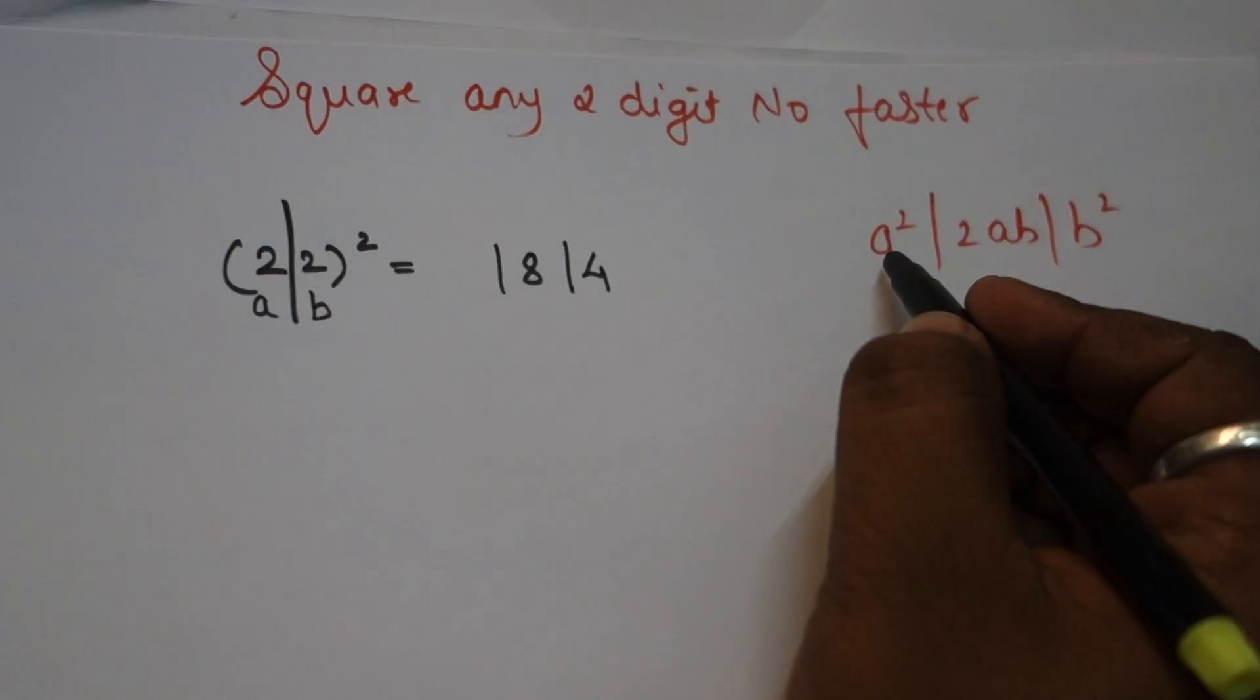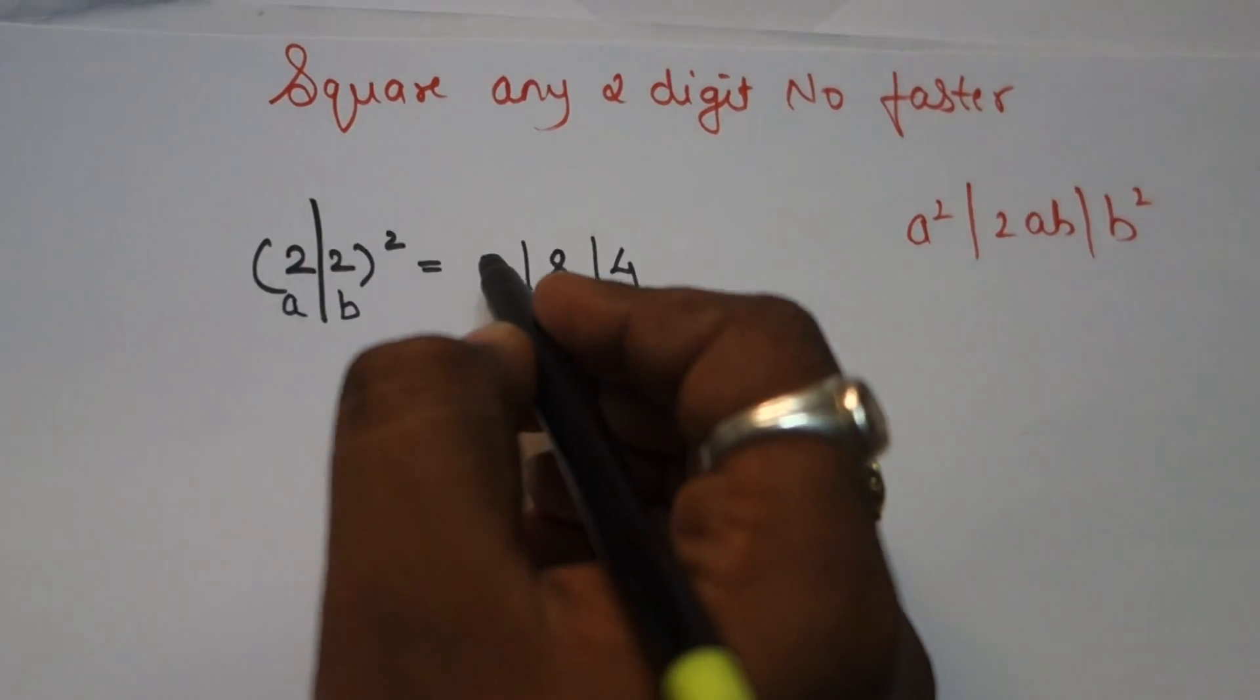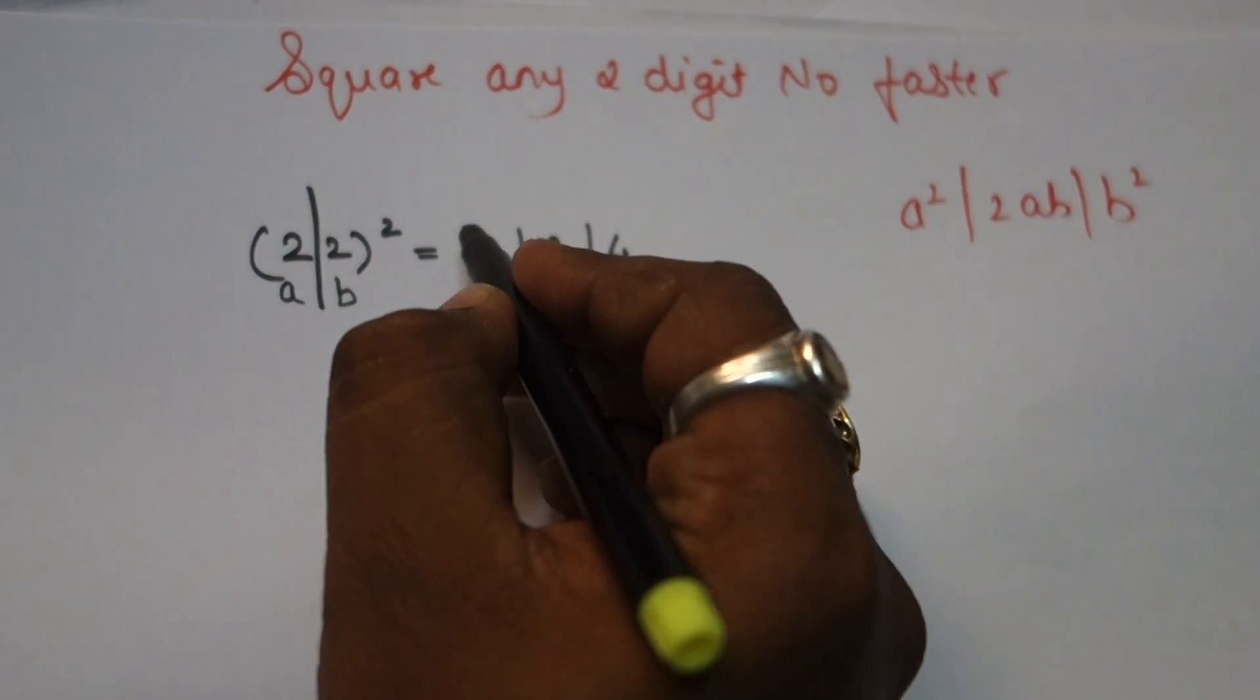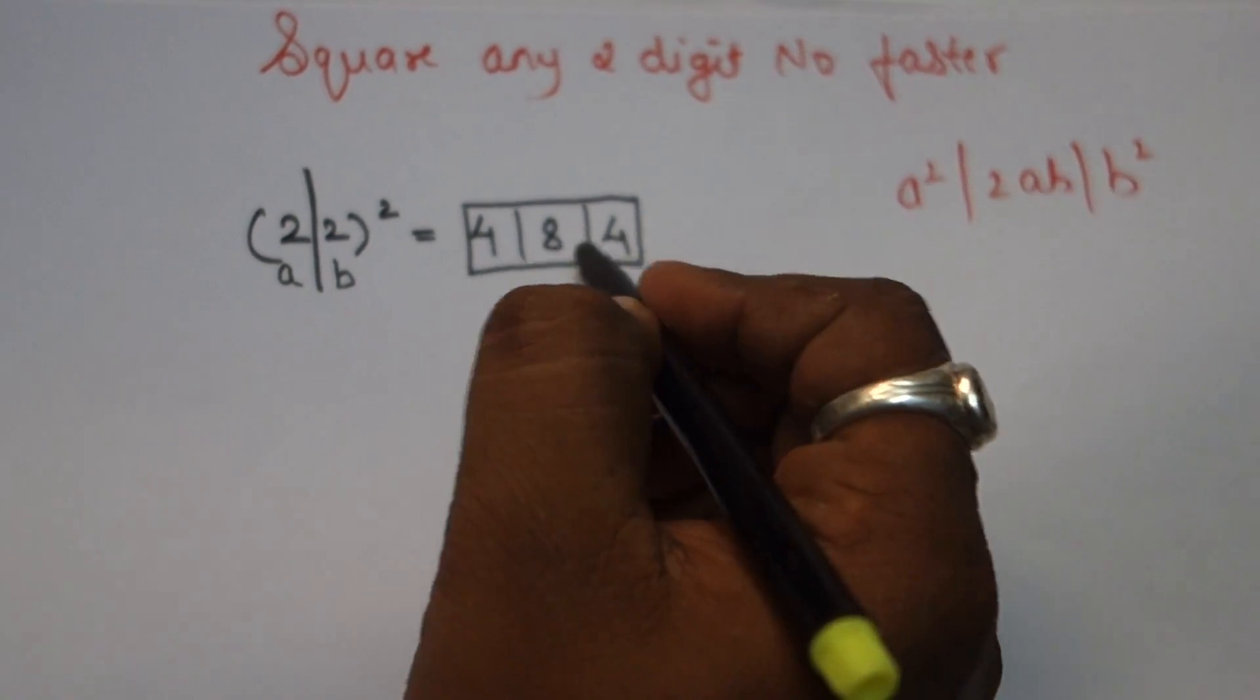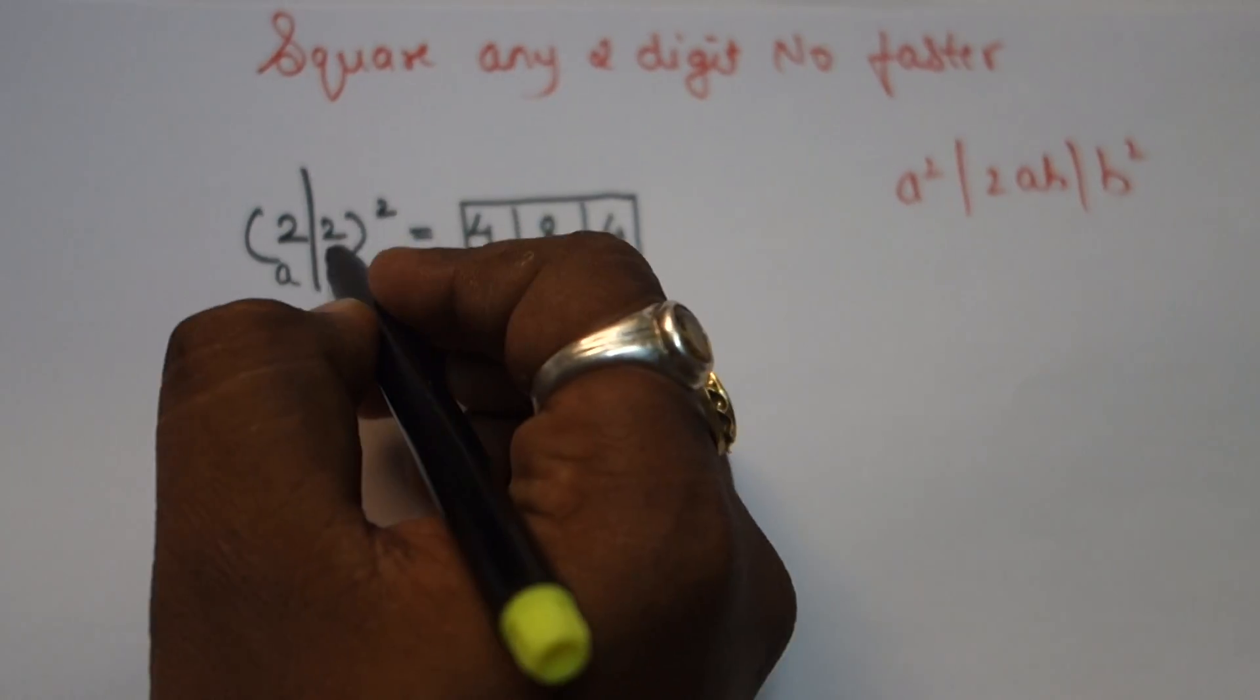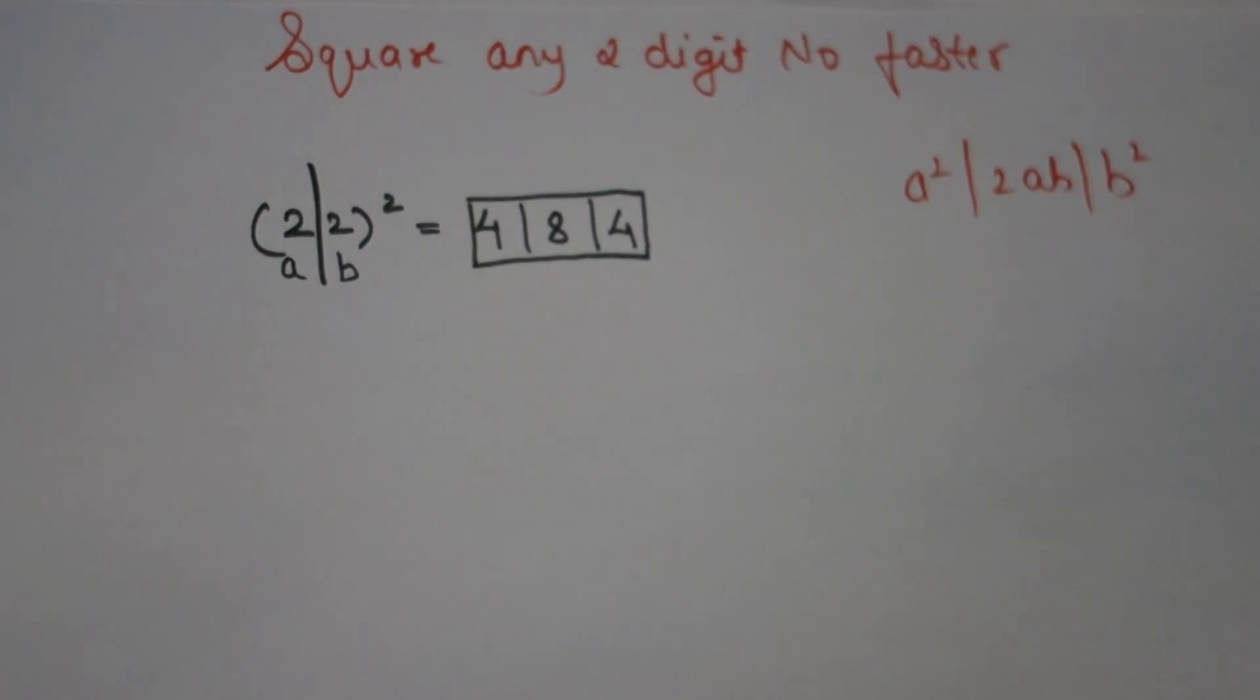Then a square: 2² = 4. When you multiply 22 into 22, you get the answer 484. 22 square is 484.